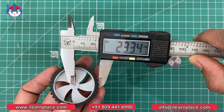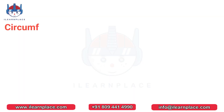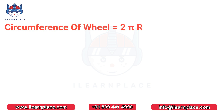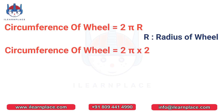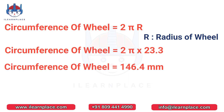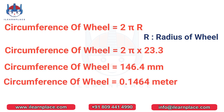Therefore, the circumference of each wheel is calculated using the formula 2πr, where r is the radius of the wheel. In our case, the circumference of each wheel is 146.4 mm, which is equal to 14.64 cm or 0.1464 m.